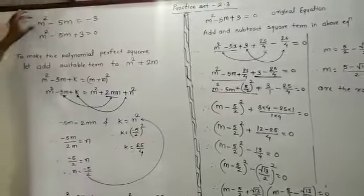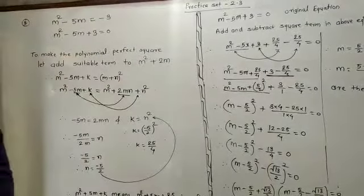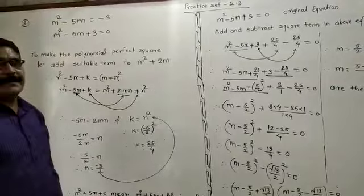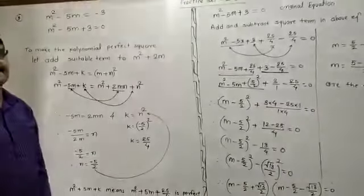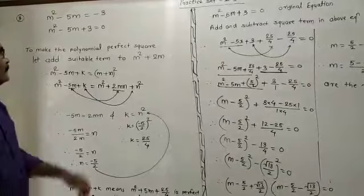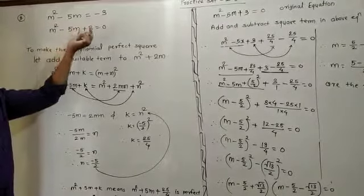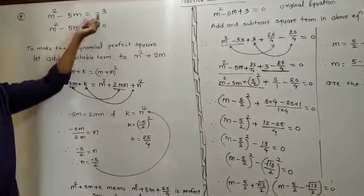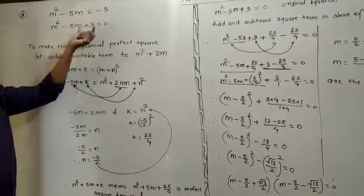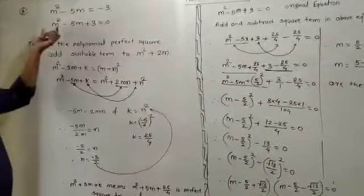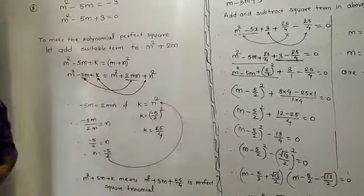Example: m squared minus 5m minus 3. According to the first rule, you have to write the given polynomial in the form ax squared plus bx plus c equals 0. You have to transpose minus 3 from right to left. Minus 3 becomes plus 3, and this becomes m squared minus 5m plus 3 equals 0. This is in the form ax squared plus bx plus c equals 0.